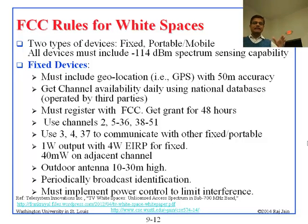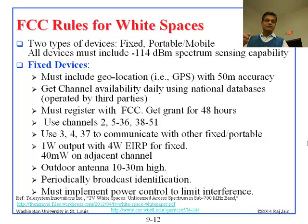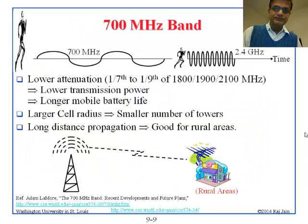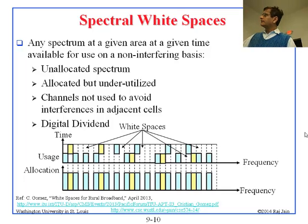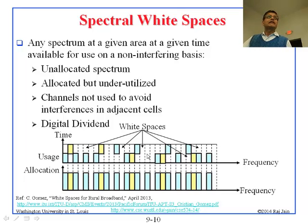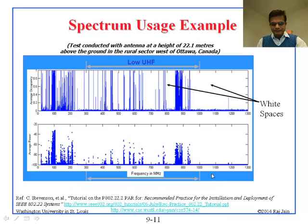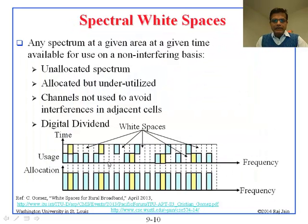On adjacent channels, the limit is 40 milliwatt. If somebody is using channel 2 and you use channel 3, then you are adjacent and cannot transmit more than 40 milliwatt. The 1 watt is allowed only if nobody is using that channel or its adjacent channels. For example, if a channel has nobody transmitting in it and nothing in the next and previous channels, you can transmit 1 watt. But if you want to transmit on a channel adjacent to an occupied one, you are limited to 40 milliwatt.